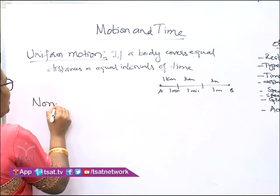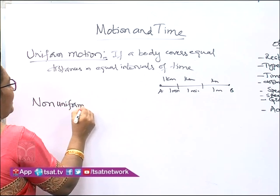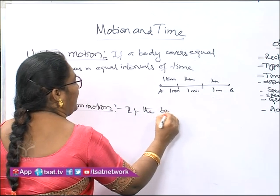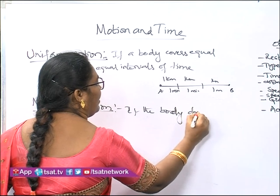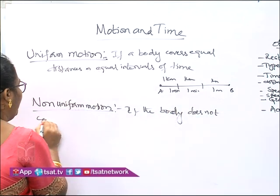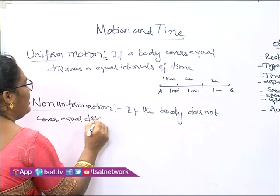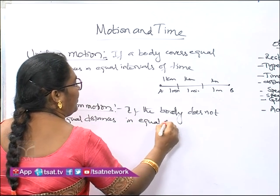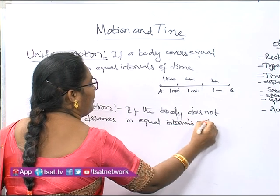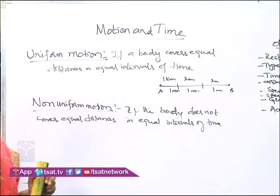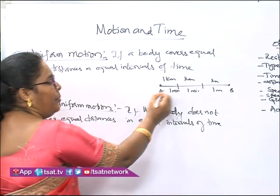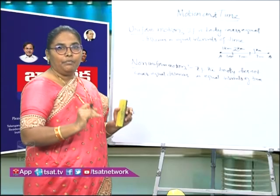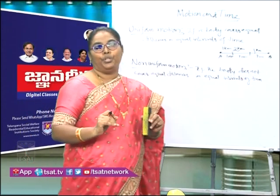Non-uniform motion: if the body does not cover equal distances in equal intervals of time. Suppose a vehicle covers 1 kilometer in 1 minute, then 2 kilometers, then 1 kilometer — the distances covered are not the same, so we say that the body is moving with non-uniform motion.